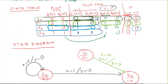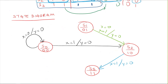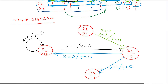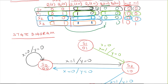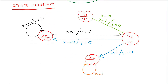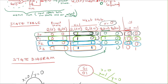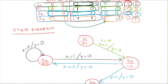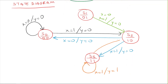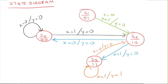From s2, if the input is 0, we go back to s0 with output y=0. From s3, if the input is 1, we stay in s3 with output y=1 — this is the only case the output is 1. If the input is 0 in s3, we go to s2 with output y=0. This completes the state diagram, which describes state transitions based on the input signal and shows the outputs.